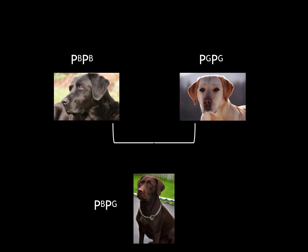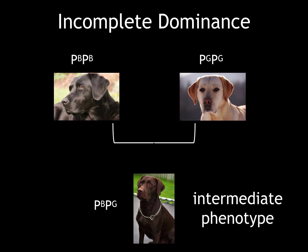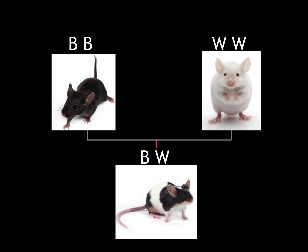This example shows incomplete dominance. In this case, we have a black lab as one parent and a yellow lab as the second parent, and the offspring is a brown or chocolate lab. This is an intermediate phenotype that combines the phenotypes of both parents.